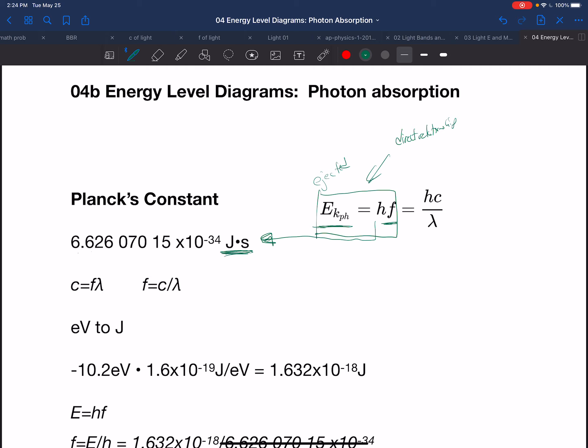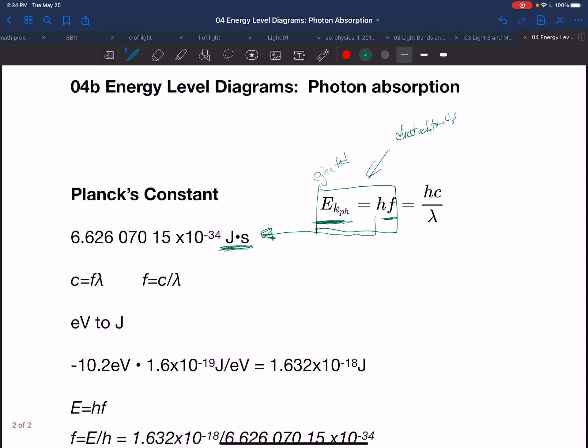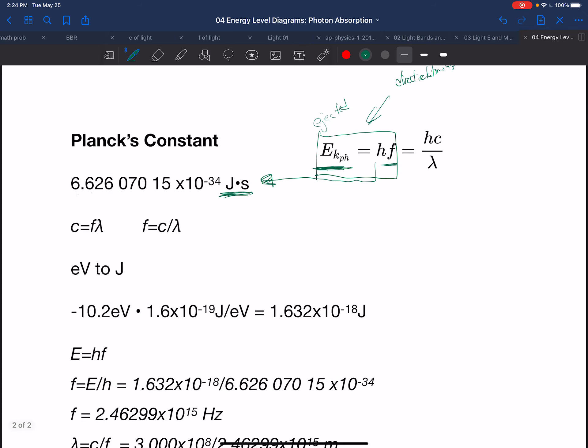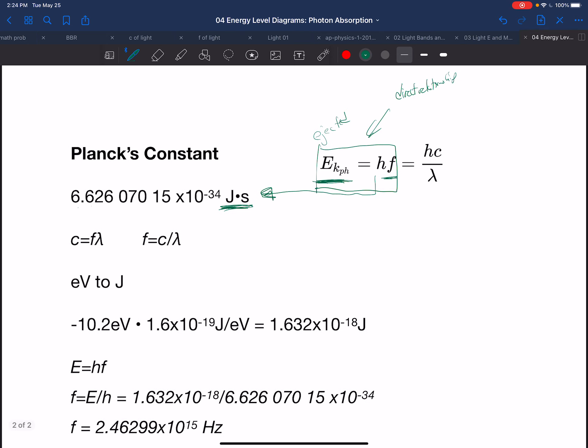That means the energies that we were talking about in the previous lesson, where we had them in eV, if this constant is in joules, we need them in joules. So that means we need to convert the electron volts to joules. So let's say we have the 10.2 electron volts from the n equals 1 to n equals 2 transition. We multiply this by the conversion, 1.6 times 10 to the minus 19th joules per eV, and that gives us this many joules. Very tiny amount of joules.